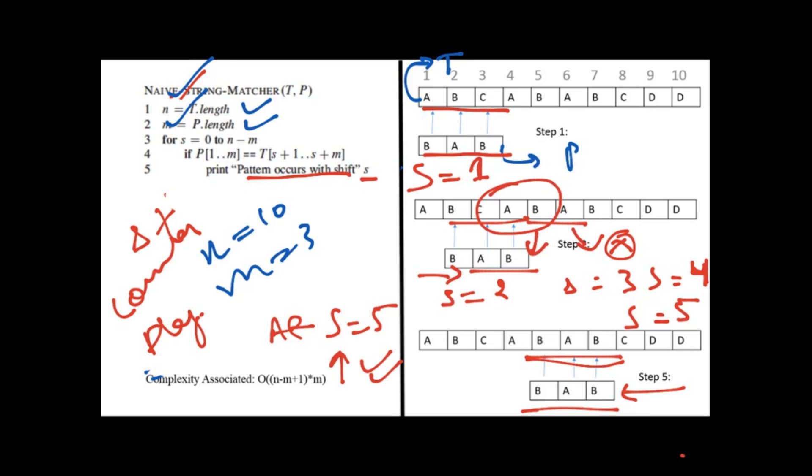Then coming to the for loop. As you all know, for loop is used for a repetitive process. We will be checking each and every letter from the text as well as the pattern. So we will be checking P[1 to M] and T[S+1 to S+M].